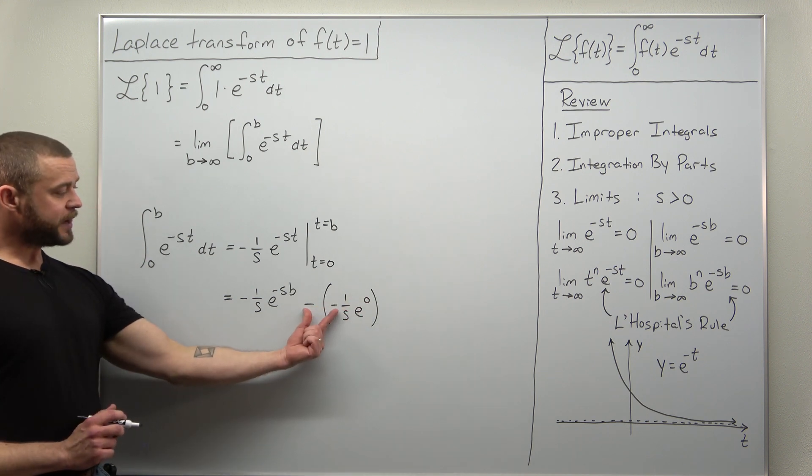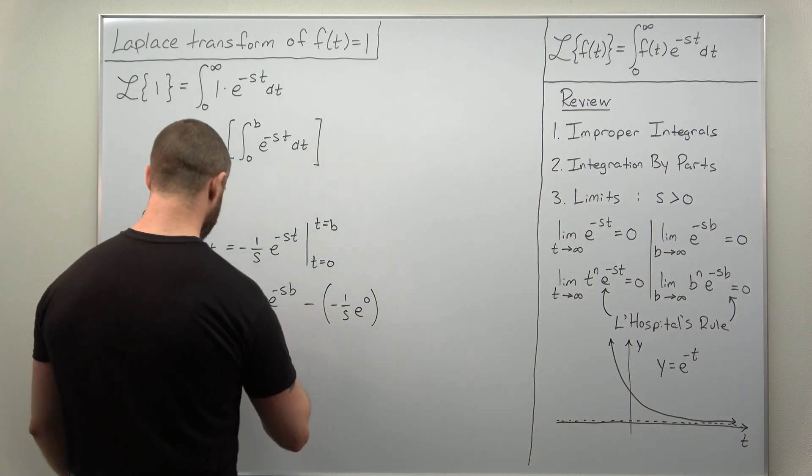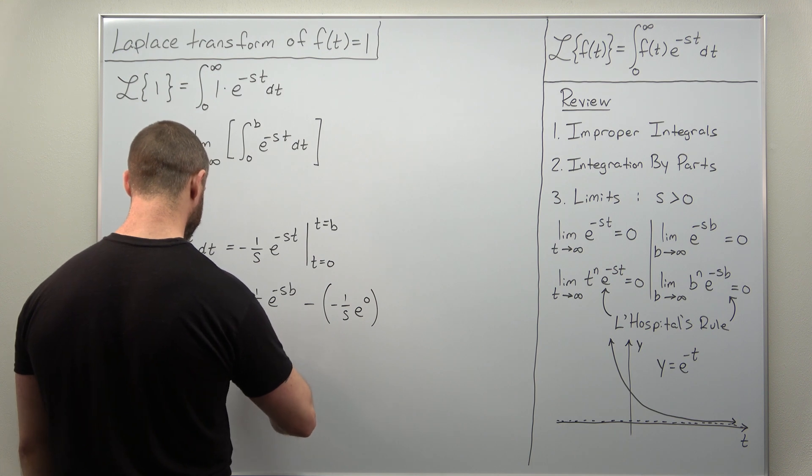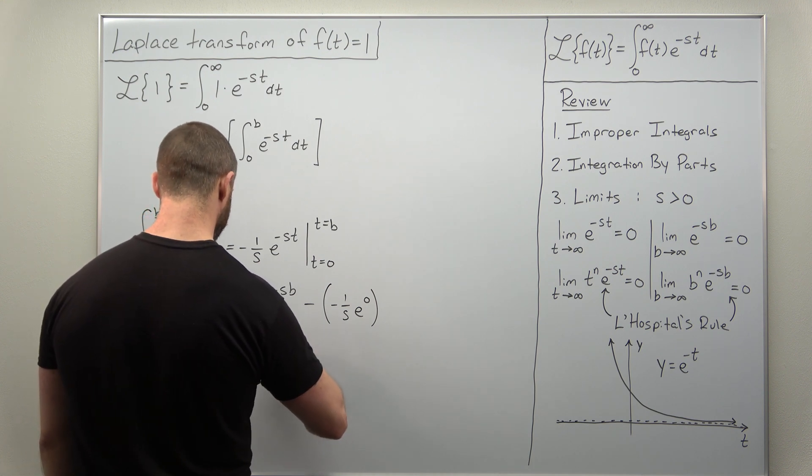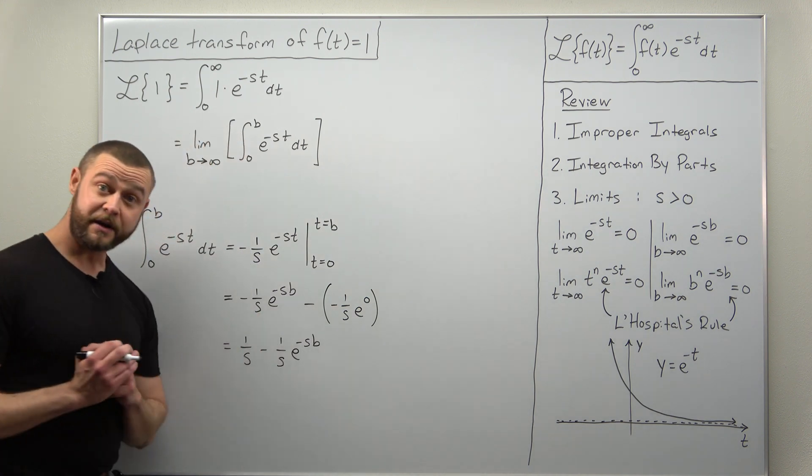e to the zero is going to be one, and the two negatives here cancel out to a positive. So we can clean this up and rewrite it as this is going to be positive one over s minus one over s times e to the negative s b.